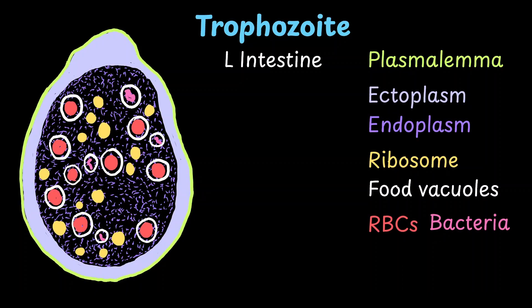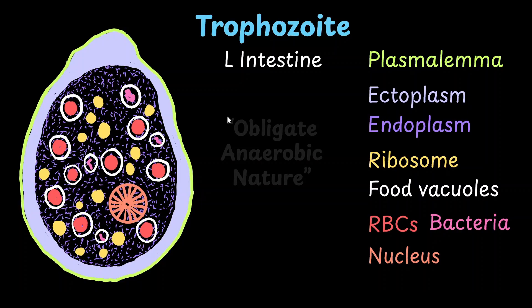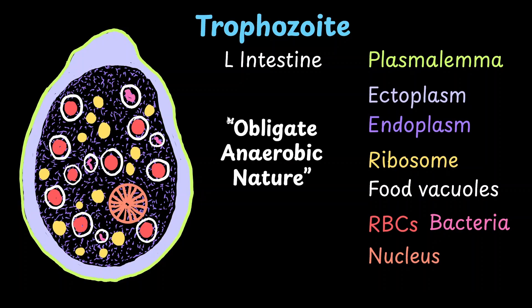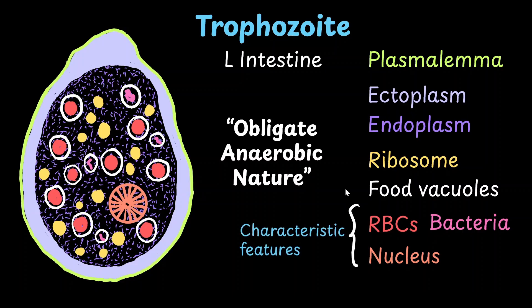It has a nucleus which is cartwheel-shaped, but it does not have a contractile vacuole, endoplasmic reticulum, Golgi, or mitochondria. This indicates that this pathogen is an obligate anaerobe. The trophozoite is an active, motile, and pathogenic state, and it uses a blunt pseudopodium called the lobopodium to move. The presence of food vacuoles with RBCs and bacteria, as well as the cartwheel-shaped nucleus, are the characteristic features of this stage.